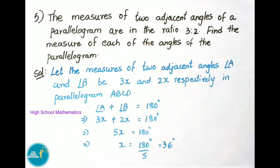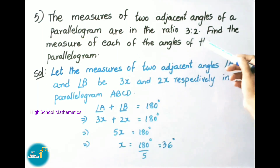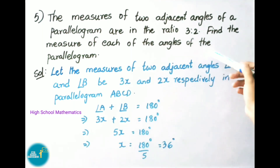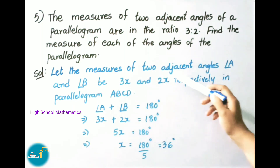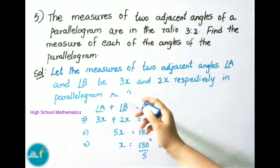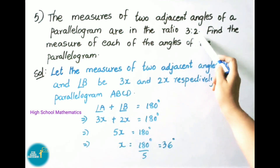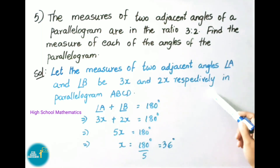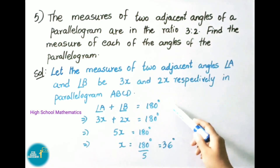Question number 5: The measures of two adjacent angles of a parallelogram are in the ratio 3:2. Find the measure of each of the angles of the parallelogram. Let the measures of the two adjacent angles, angle A and angle B, be 3x and 2x respectively in parallelogram ABCD. We know the sum of adjacent angles is 180 degrees, so angle A plus angle B equals 180 degrees.